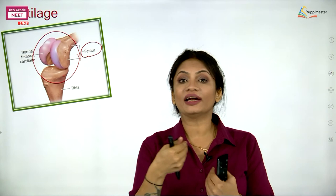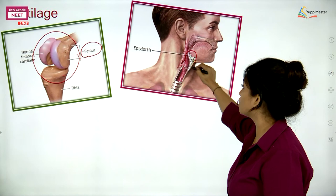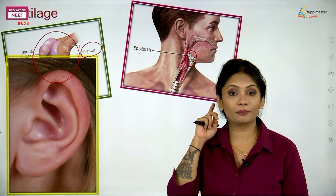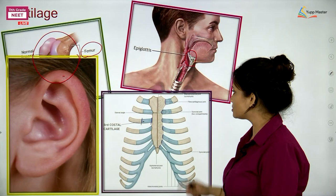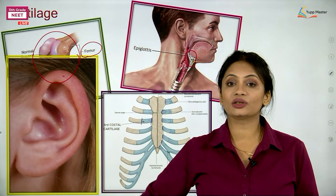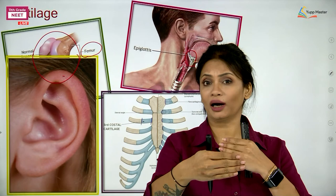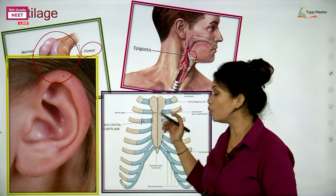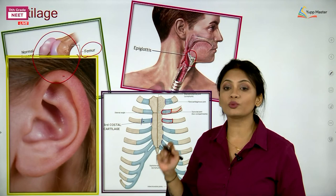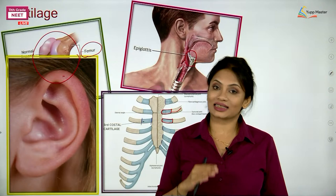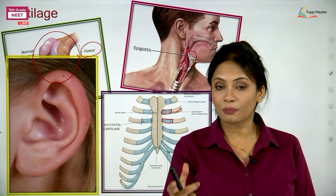Other locations of cartilage include the epiglottis — a structure preventing food from entering the respiratory tract — and the pinna, or external ear, which is also made up of cartilage. In your ribcage, all the ribs are made of bones, but when you breathe in or out, your chest expands. The bones in the front are attached with the help of these cartilages, which allow slight flexibility so that there can be expansion of the chest.